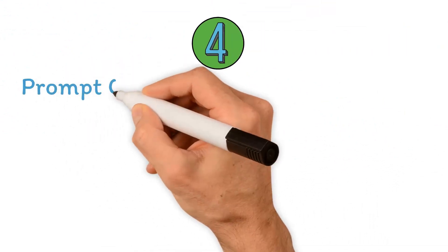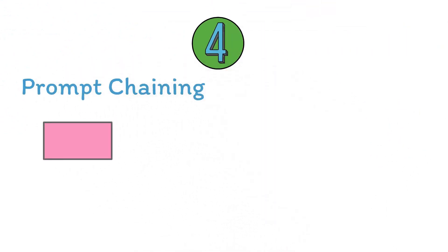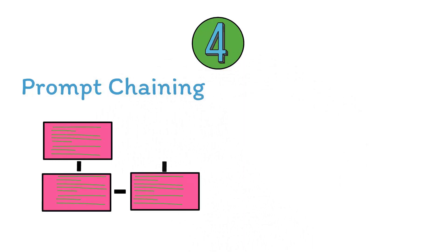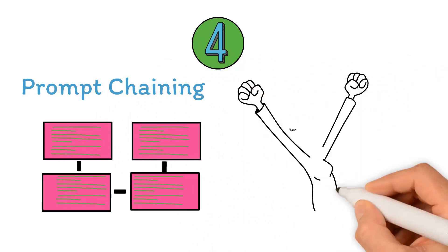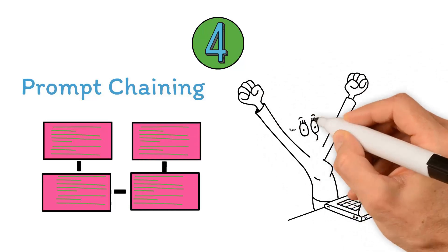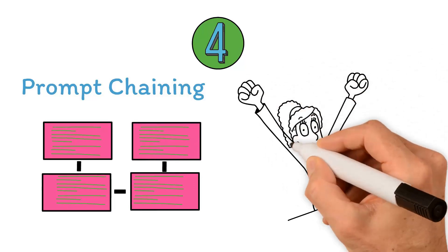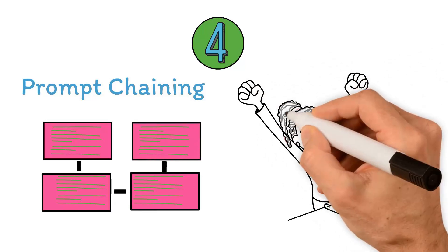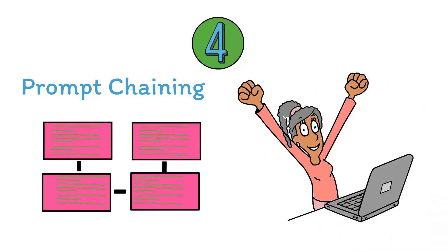Strategy four: prompt chaining — utilizing a series of interconnected prompts to guide the AI model through a complex or multi-faceted topic, thus ensuring a more coherent and in-depth response.